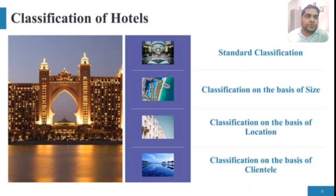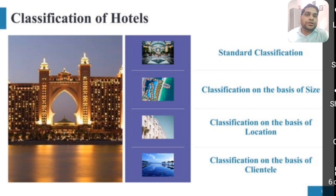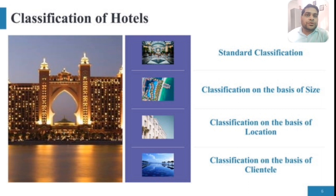Basically, we classify hotels into standard classification and classification on the basis of size — such as medium hotel, mega hotel, and large hotel. There is also classification on the basis of location — whether the hotel is situated in a sea area, a hill station resort, downtown, outside the city, suburban, or inside the city.